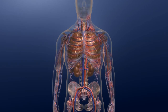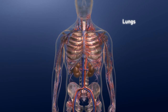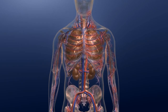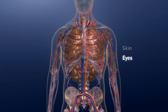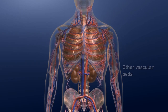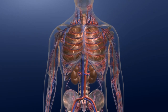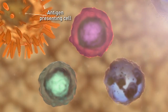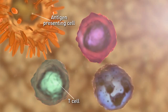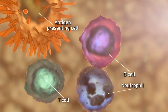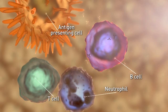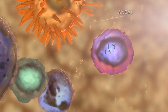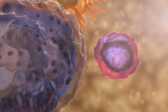AAV often involves the blood vessels of the lungs and kidneys, but it can also cause damage to the blood vessels in the skin, eyes, and other vascular beds. The autoimmune response involves antigen-presenting cells, T-cells, neutrophils, and B-cells, which are the cells responsible for synthesizing ANCAs. However, the interplay of these cells is not fully understood.